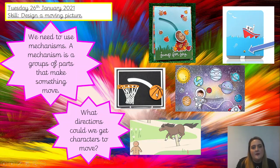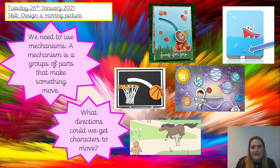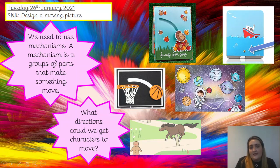Here we've got a slit in the paper that goes from side to side, and this mechanism goes from side to side. So we've got our horse and he can go forwards or backwards, like he's chasing the gingerbread man. And again here we've got our astronaut that can go forwards or backwards in the space scene.